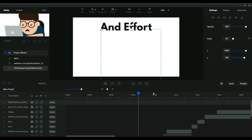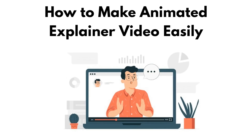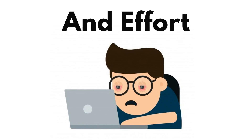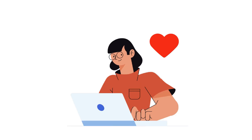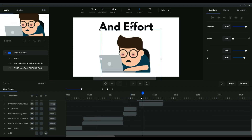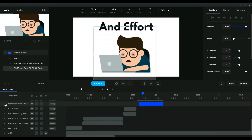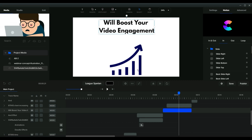Here is the final result: the completed animated explainer video with voiceover, synchronized visuals, vectors, and various motion animations. I've added vectors that correspond to each part of the voiceover and applied several motion effects. There is also a Lottie animation — it's a JSON file, not a vector file. Lottie animations are very smooth and look great in explainer videos.